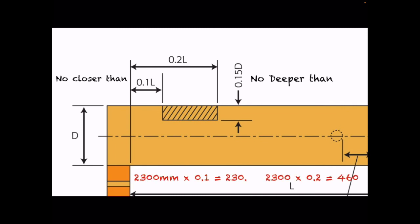In this example the length was 2300 millimeters. To find the nearest you can start your notch, do 2300 × 0.1 = 230 millimeters. For the furthest point, do 2300 × 0.2 = 460 millimeters. You can cut a notch anywhere within that range — between 230 millimeters and 460 millimeters from the edge of the joist — and it will be legal.